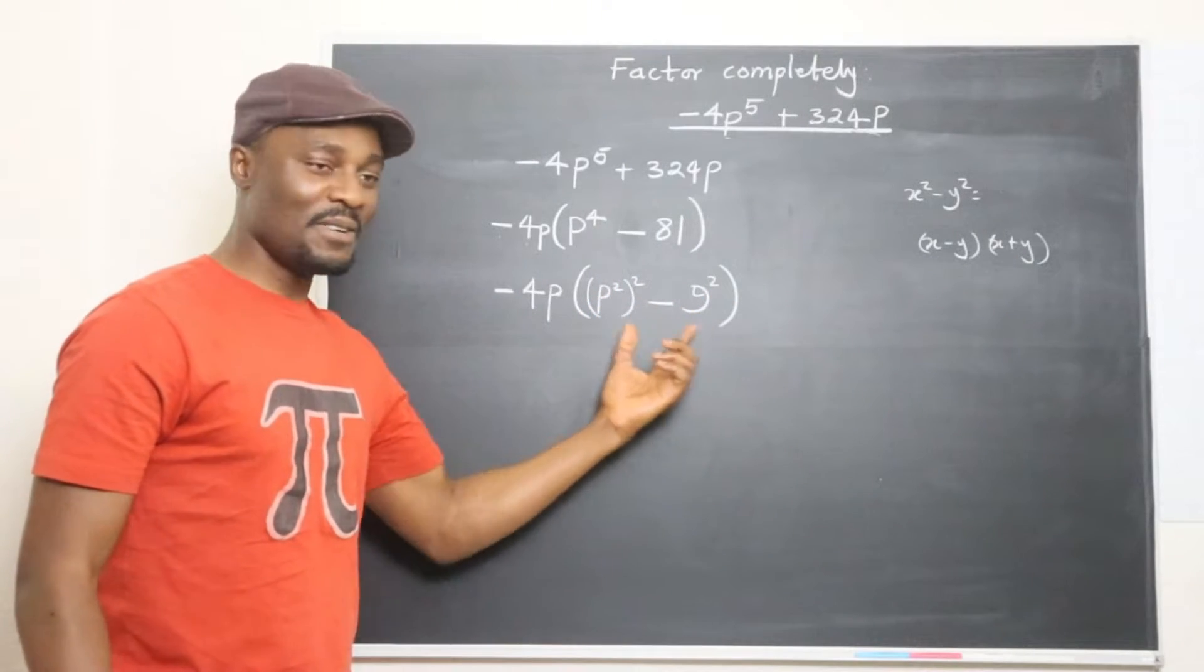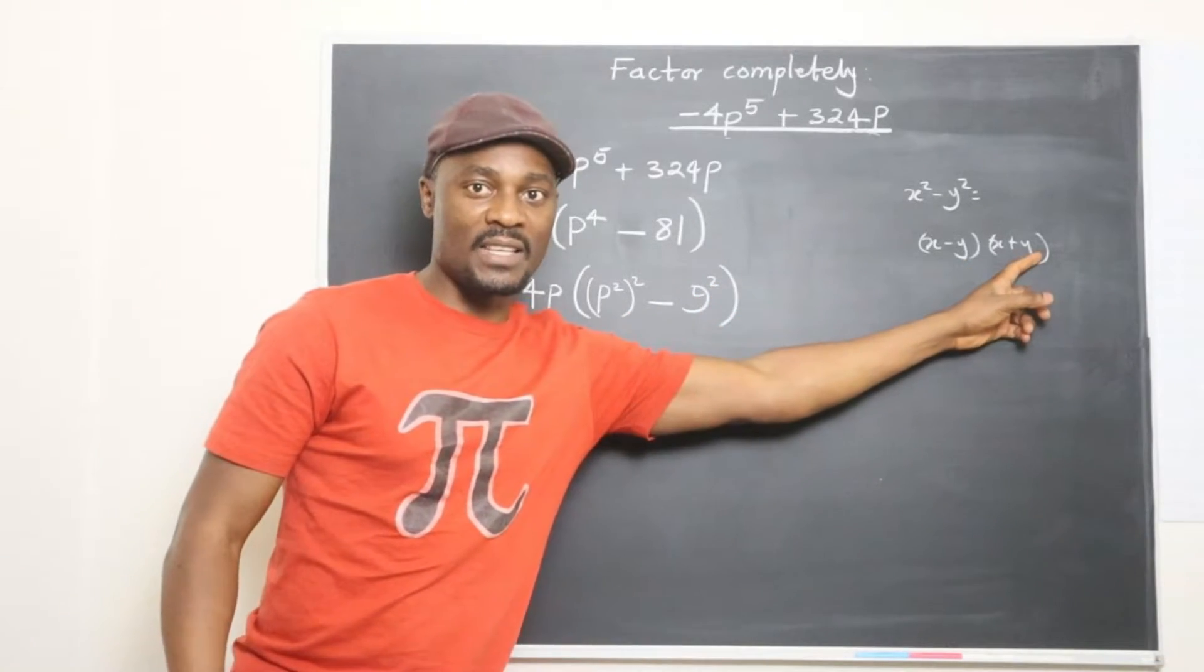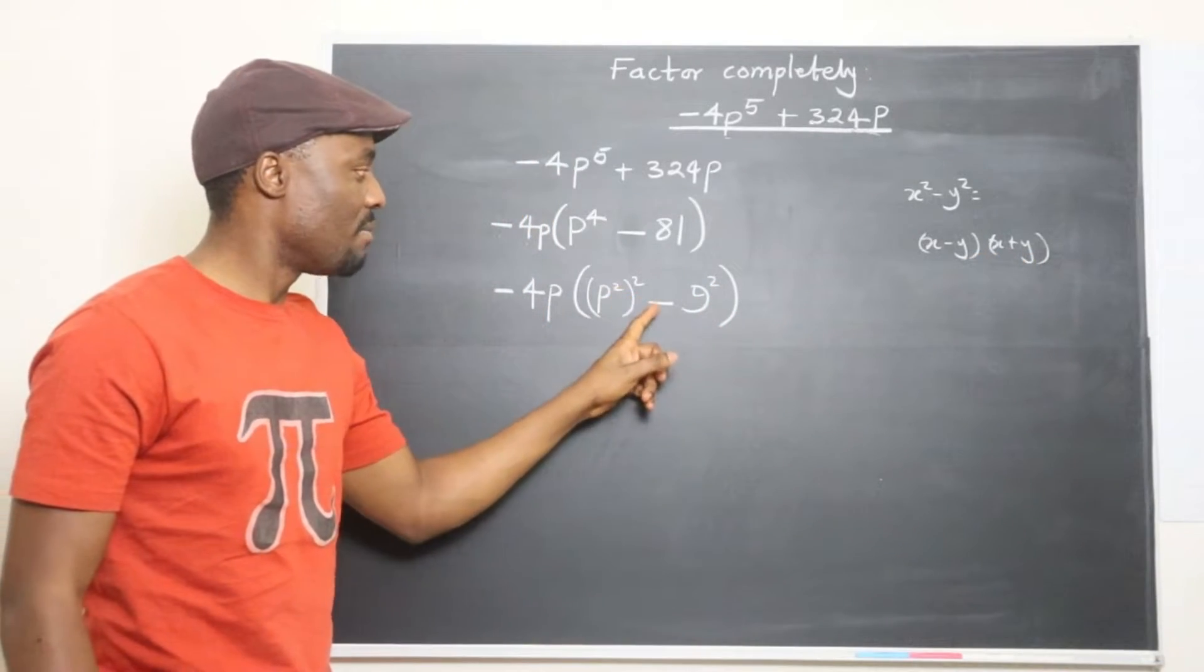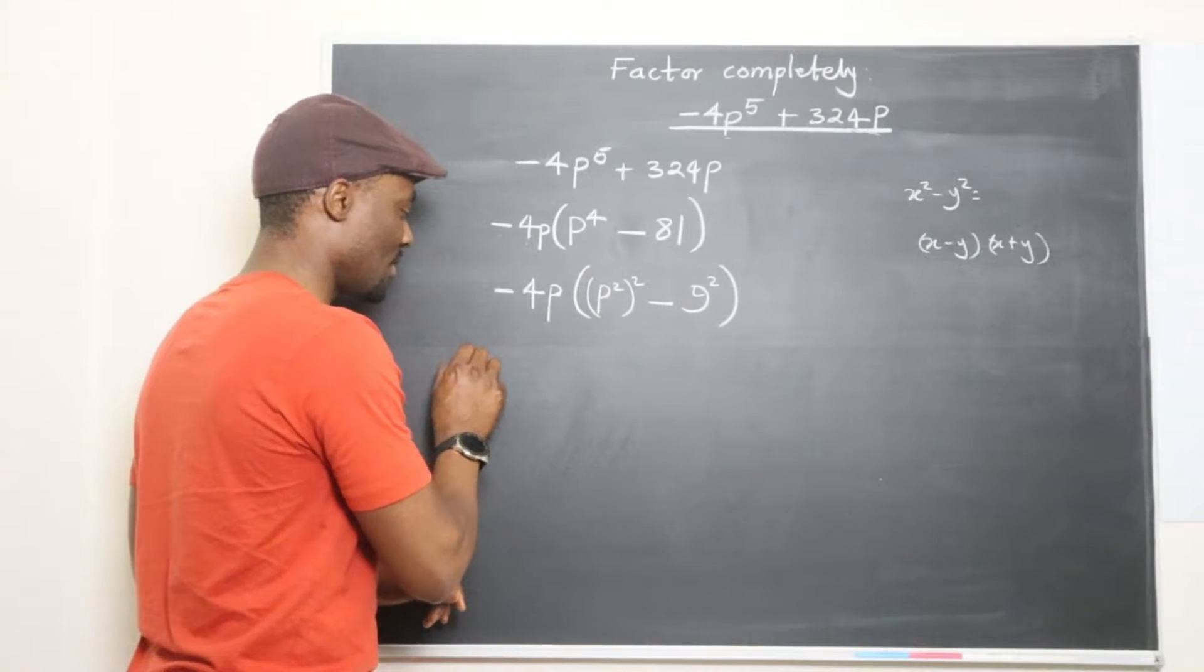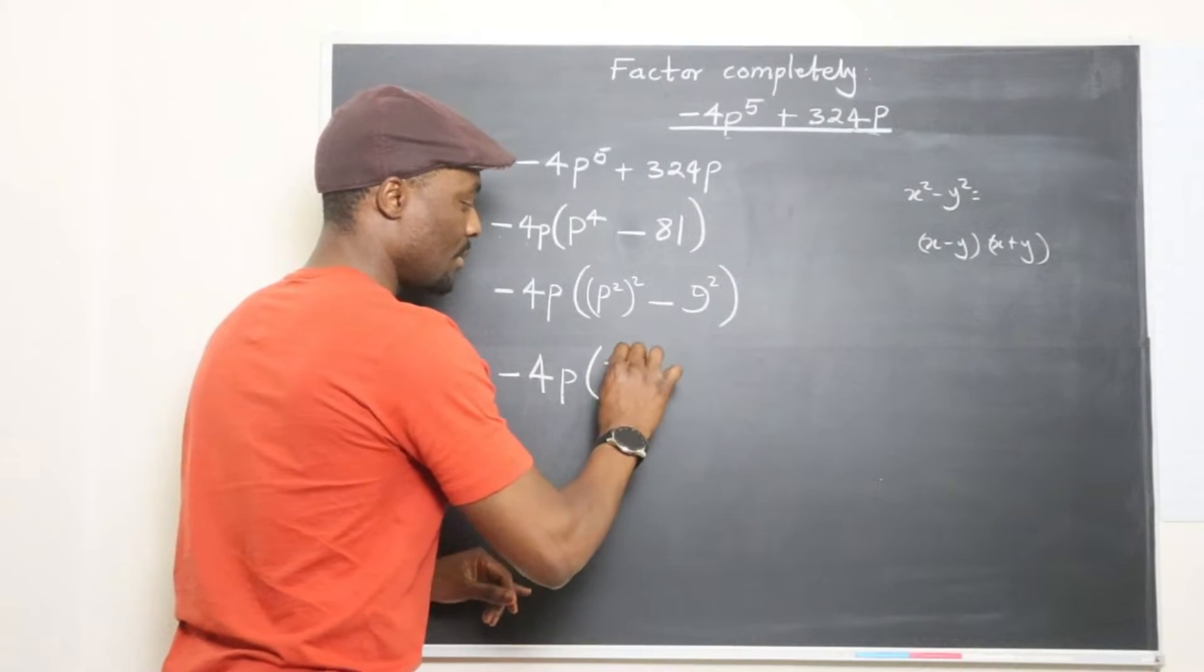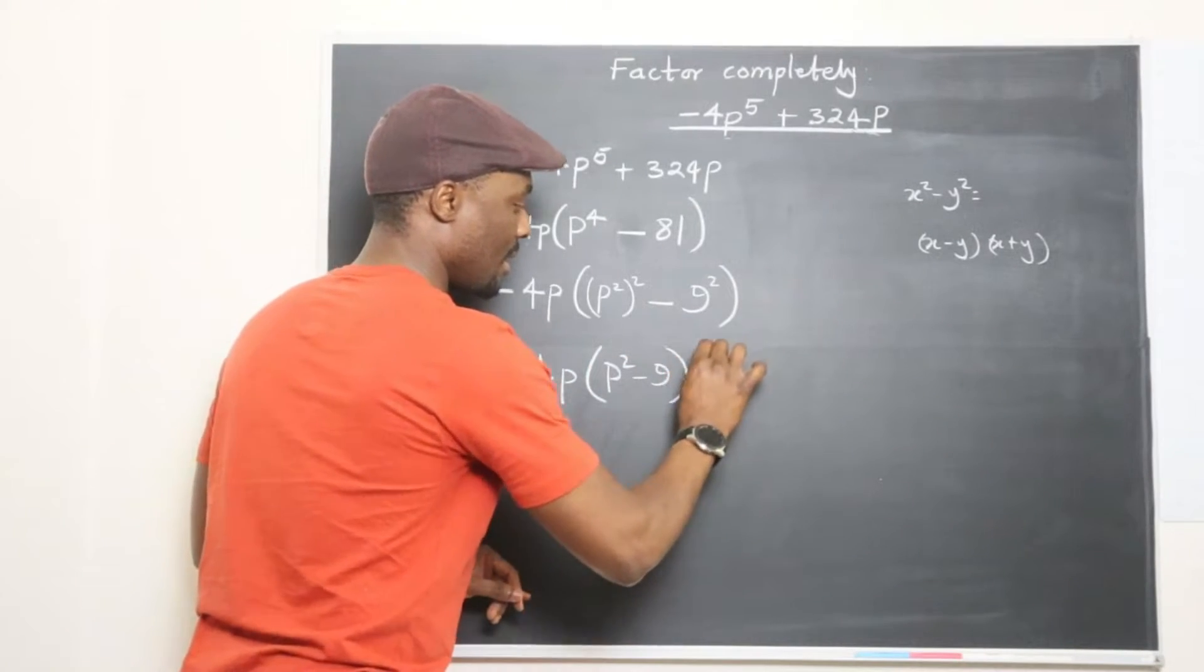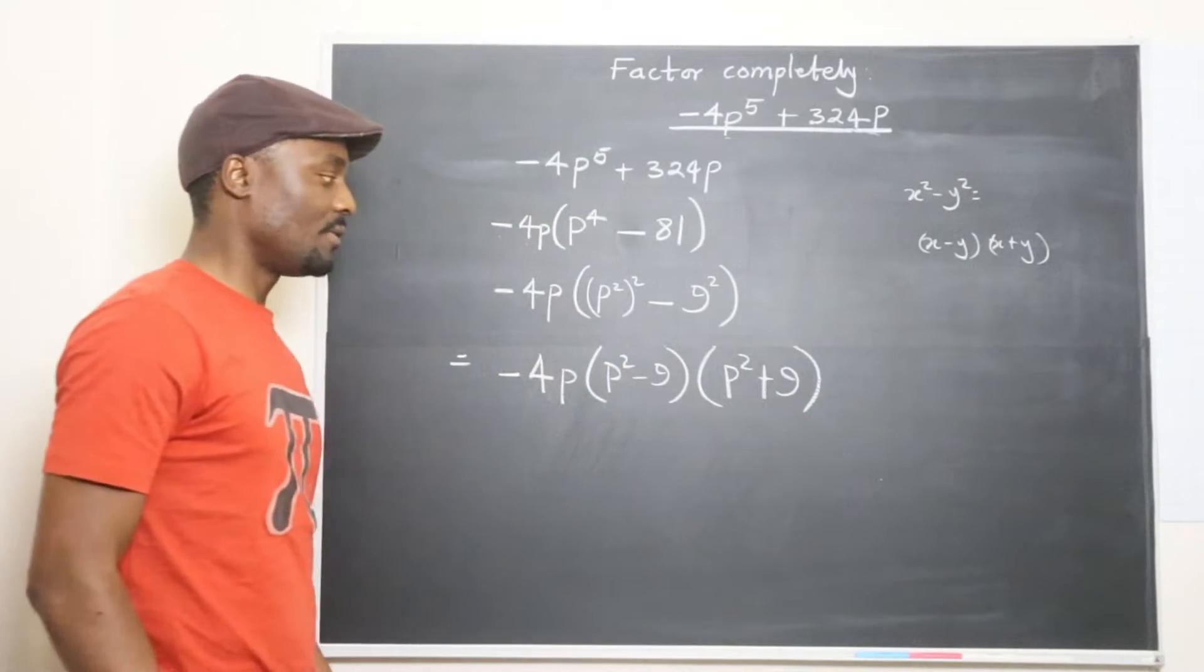So now you have P squared squared minus 9 squared. So that gives you a difference of two squares. So when you open this up, you're going to end up with P squared minus 9, P squared plus 9. Let's write that. So this is going to end up being negative 4P into P squared minus 9 and P squared plus 9.